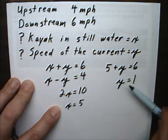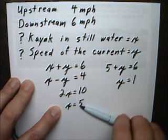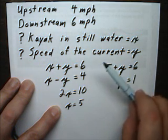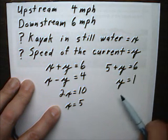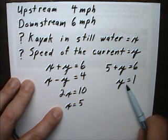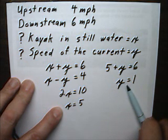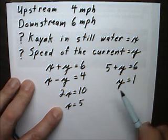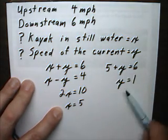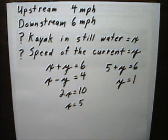So the speed of the current is 1 mile an hour, and the speed of the kayak in stillwater is 5 miles an hour. Everything makes sense: 5 miles an hour plus the 1 mile an hour for the stream going downstream gives 6, and subtracting the 1 gives 4 for upstream.